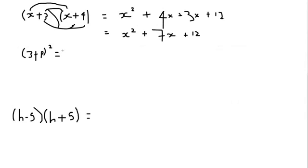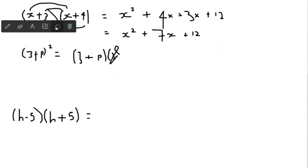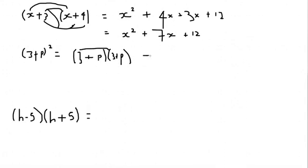This one is 3 plus p squared. You can just do it but I'm going to write it all out. So 3 plus p and then 3 plus p. Then we've got to do exactly the same thing.